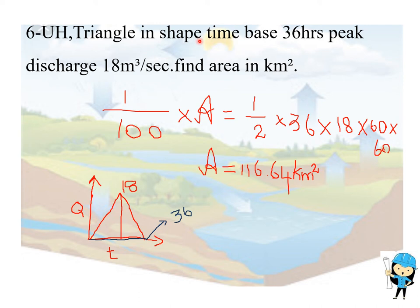A hydrograph triangular in shape has time base 36 hours and peak discharge 18 cubic meters per second. Find the area in square kilometers. We already know the flood discharge - the curve of discharge by time gives the area of the rainfall intensity for 1 centimeter. Here, in the question itself they said it is triangular in shape.